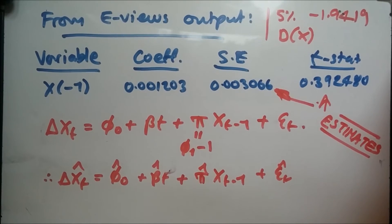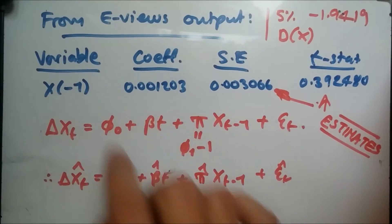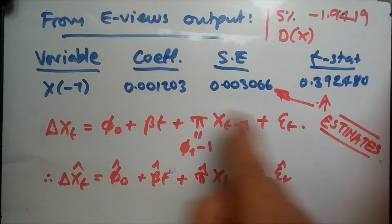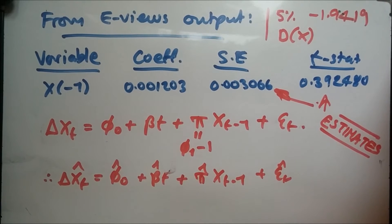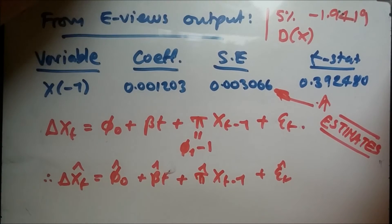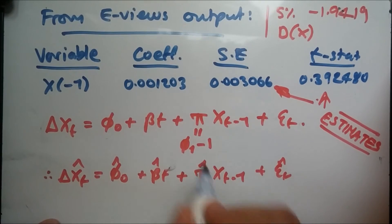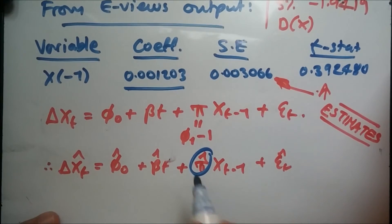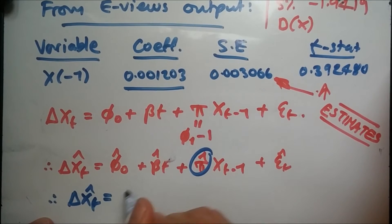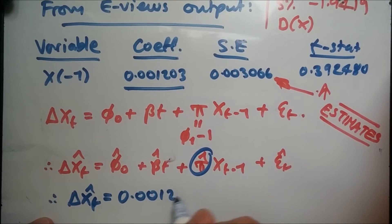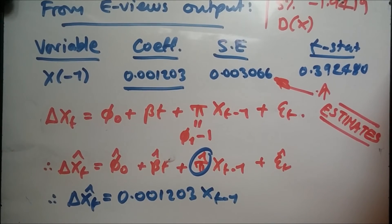Notice from the output that we only got one value, the coefficient. This implies that the constant term is zero, the trend is zero, and the error term is zero. According to the output, the only value we have is this one. Everything else is zero. That means delta X_t equals 0.001203 X_t minus 1, and that's it.